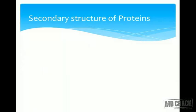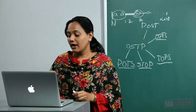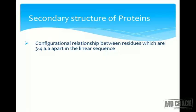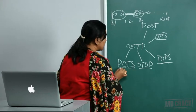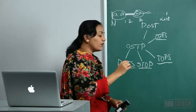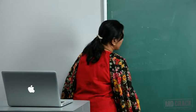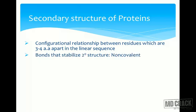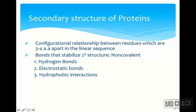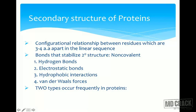Now we go to the secondary structure of proteins. The secondary structure determines the configurational relationship between amino acids that are three to four residues apart in the linear sequence. The bonds which stabilize the secondary structure are non-covalent bonds: hydrogen bonds, electrostatic bonds, hydrophobic interactions, and van der Waals forces. Electrostatic bonds occur between positive charges — epsilon amino of lysine, guanidinium of arginine, imidazole of histidine — and negative charges, the carboxyl groups of aspartate and glutamate.